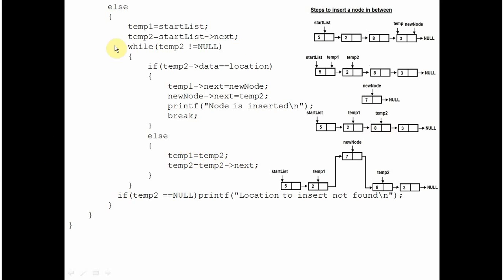This loop will terminate when temp2 reaches the null pointer if the user inserts a value which does not exist in the linked list. In that case, it will come out saying that the location to insert is not found and it won't insert anything. This while loop checks if the value where the user wants to insert exists or not. When the data member of temp2 equals the location — say we want to insert before 8 — you will ask the next member of temp1 to point at the new node and the next member of new node to point at temp2. This is how the new node is inserted.